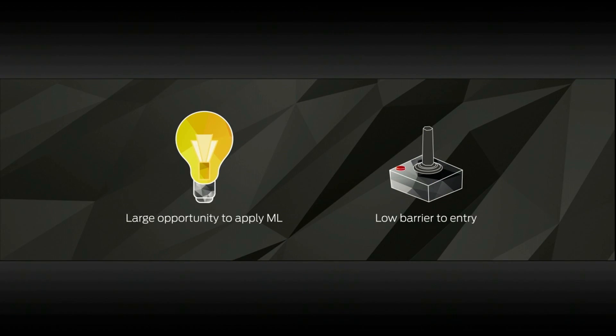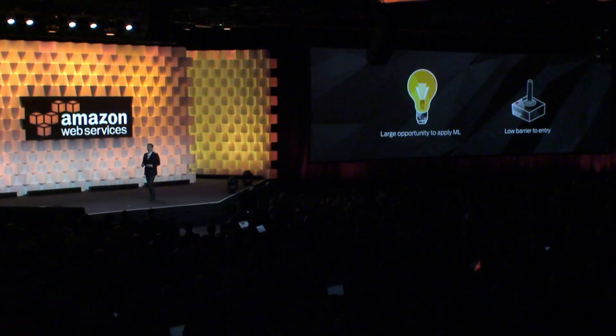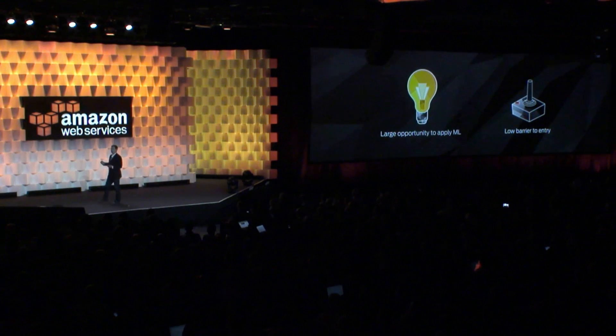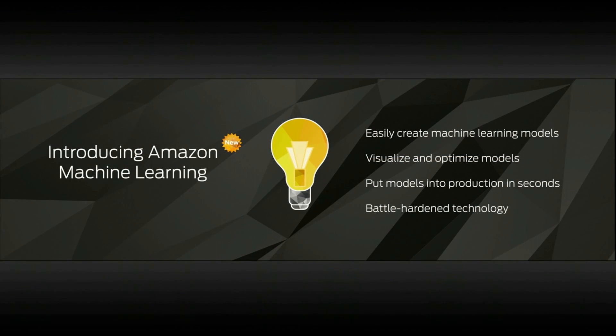We heard loud and clear from customers that they saw a large opportunity in applying machine learning to the applications and data they already housed on AWS. But they wanted to do that with as low a barrier of entry as possible — point and click easy — so that all of their developers can use machine learning to make predictions going forwards. This is the opportunity of Amazon Machine Learning: it allows customers and developers to easily create machine learning models and very quickly visualize and optimize those models using simple tools built right into the AWS Web Management Console.